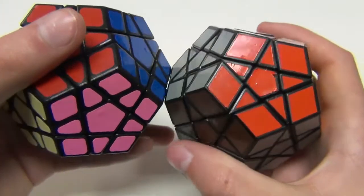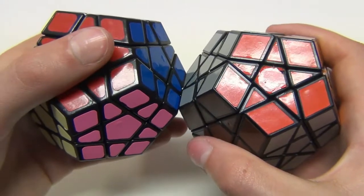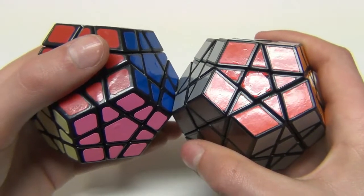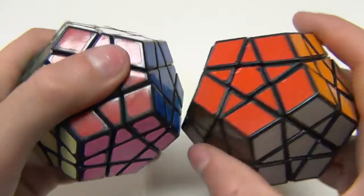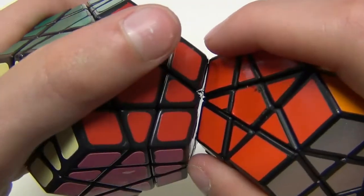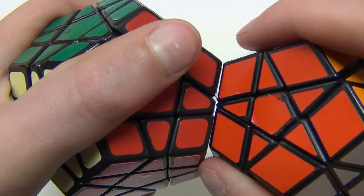And the third difference is the size. I don't know if you can see this or not, but the Hungarian Supernova is a tad smaller than a standard MF-8 Megaminx. Yeah, there you go. You can kind of see it's a little bit smaller.